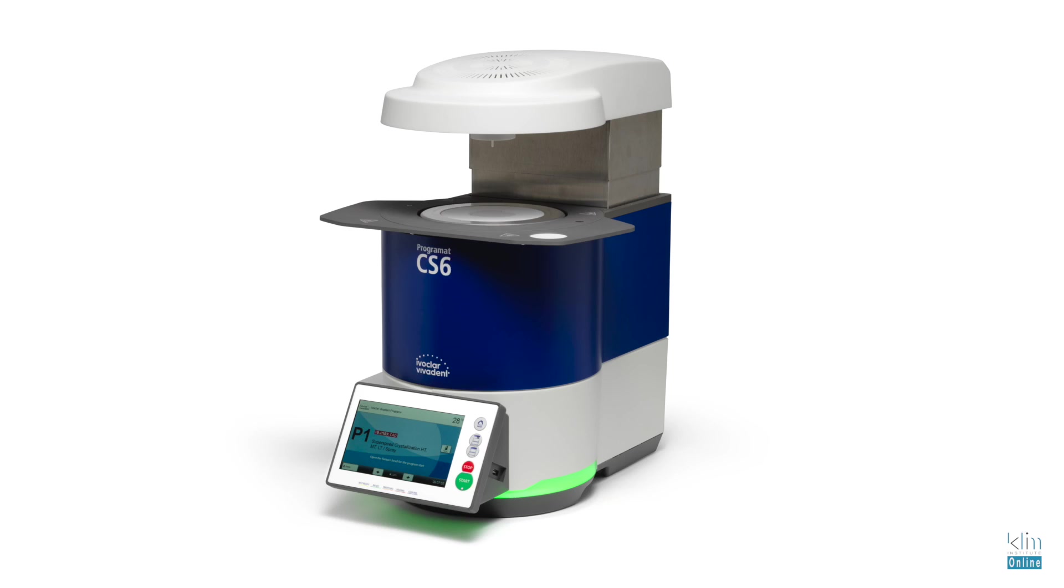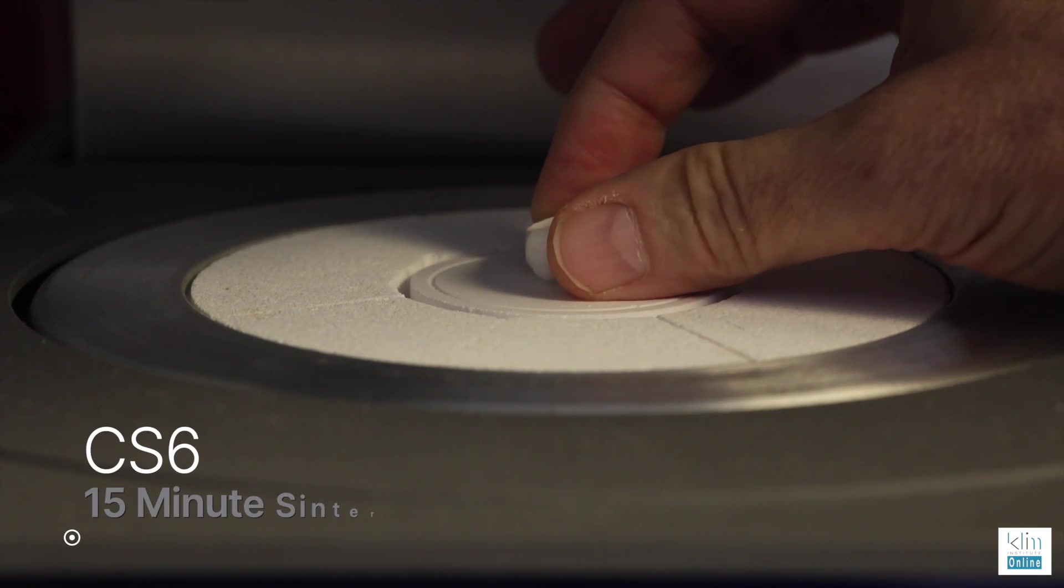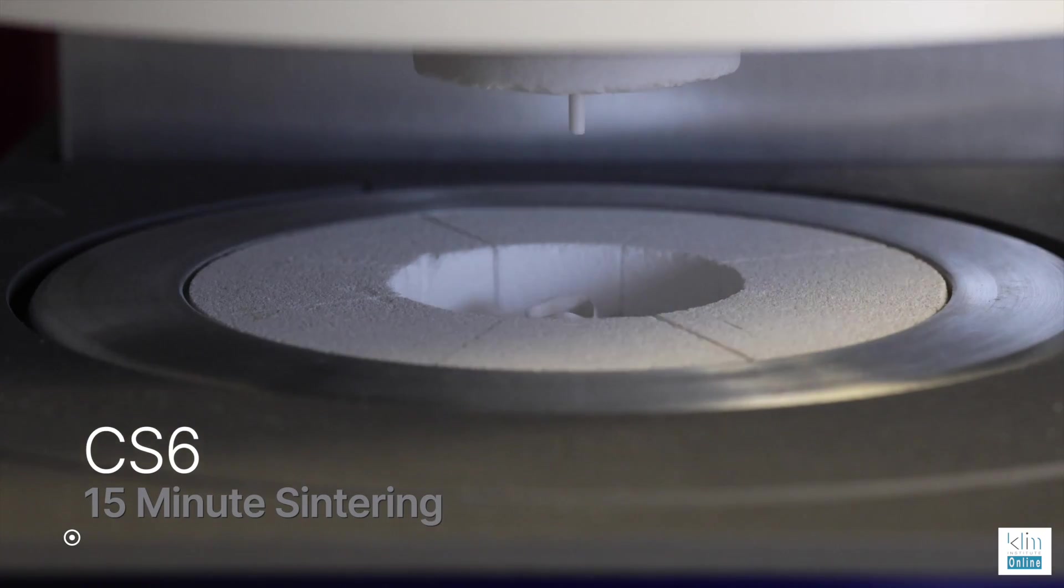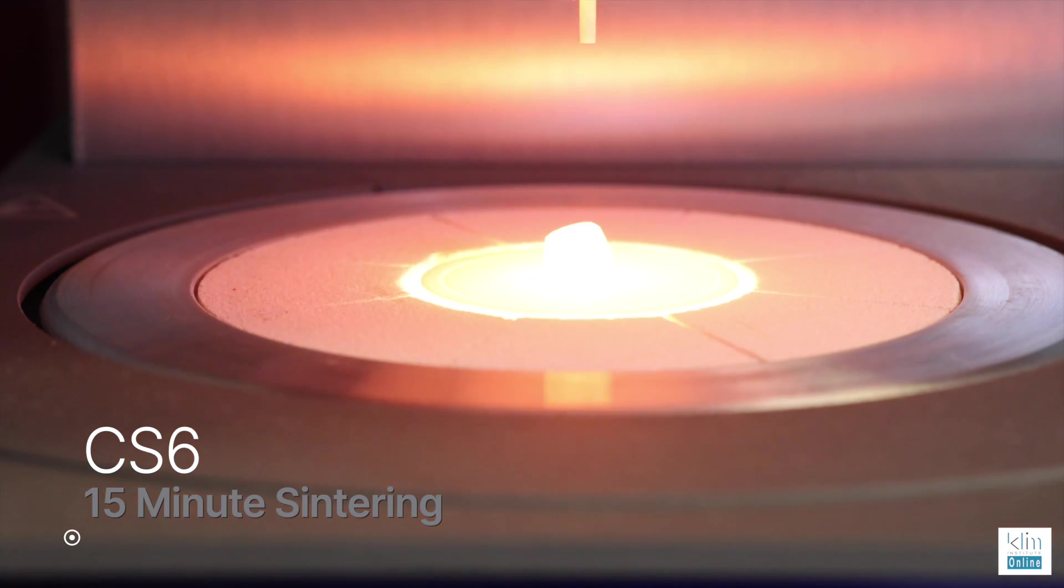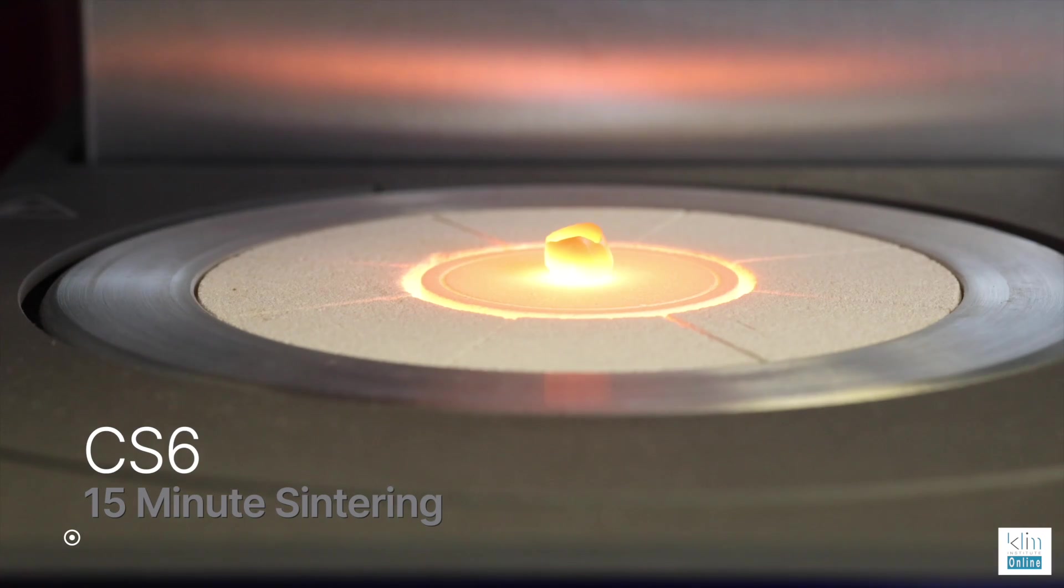One thing nice about the Prime, particularly when you're applying it to the CS6, is that we have a 15-minute cycle, which really comes in handy for those same-day restorations, and the restorations look really good. My criteria for shade selection will be about two shades darker block than my intended shade. So if I want an A1, I'm going to go with at least an A3 or an A3.5.